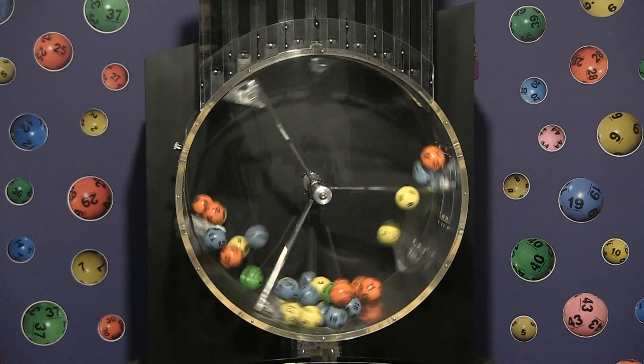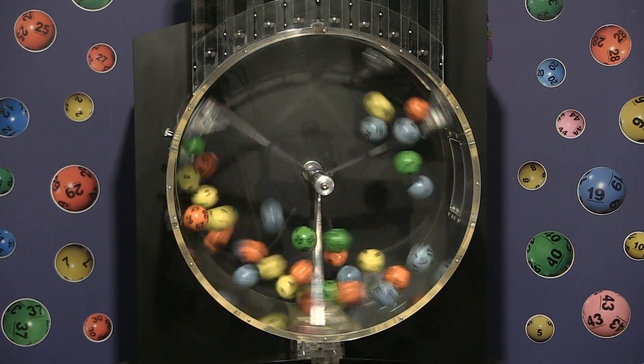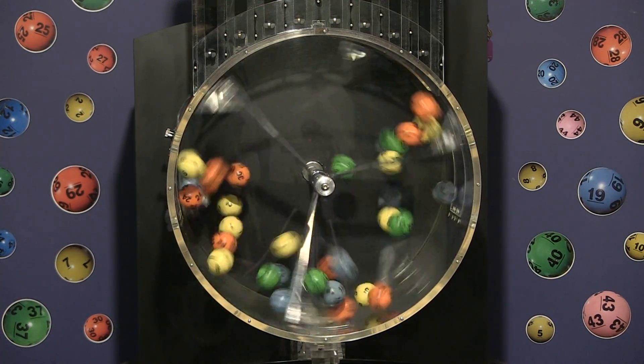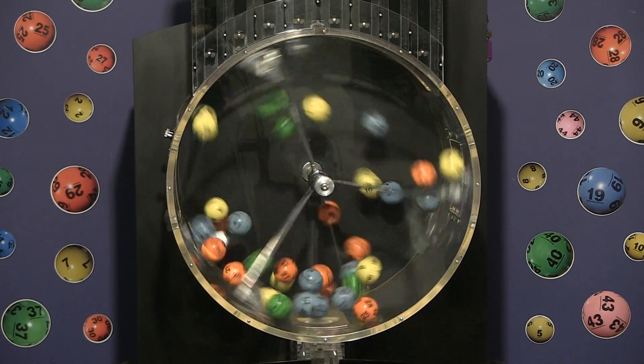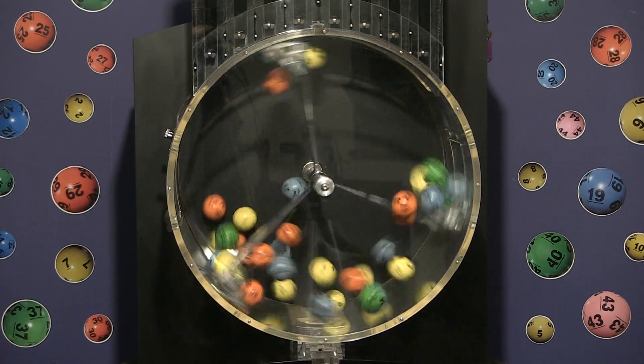Hi everyone this is Jim and welcome to the Mass State Lottery's Mass Cash drawing for Tuesday May 16th 2017. On masslottery.com stay logged on because coming up shortly is the Mega Millions drawing with an estimated 36 million dollar